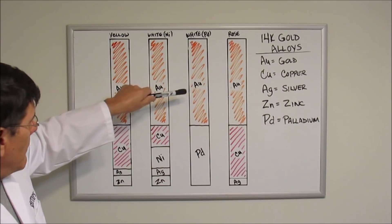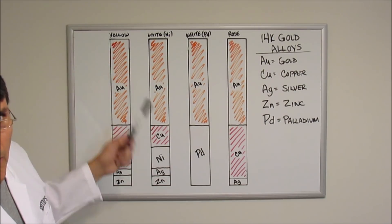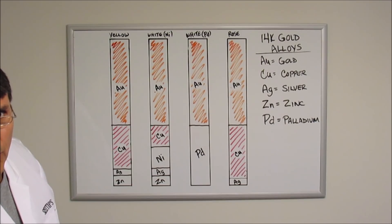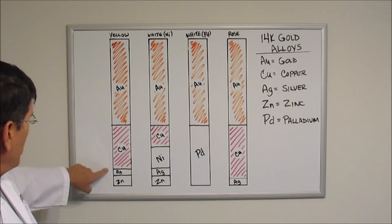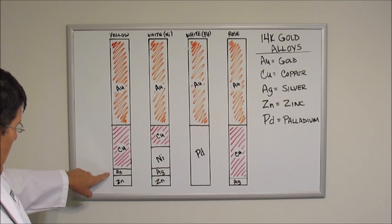Roughly 59 percent pure gold to the alloy. To get the yellow gold alloy, copper is added in the amount of about 30 percent copper, and then about 5 percent silver and 5 percent zinc, give or take.